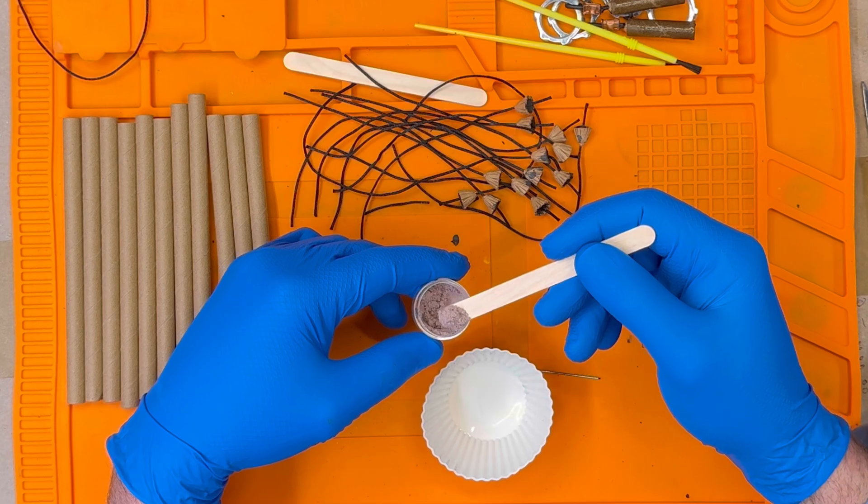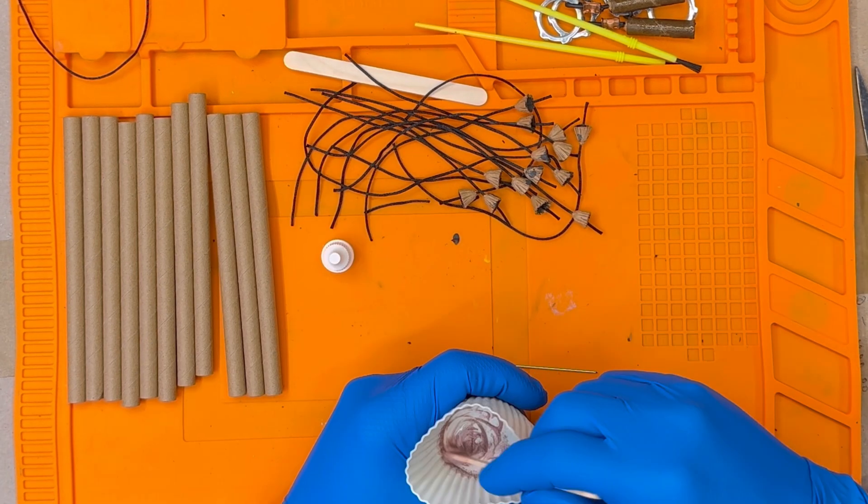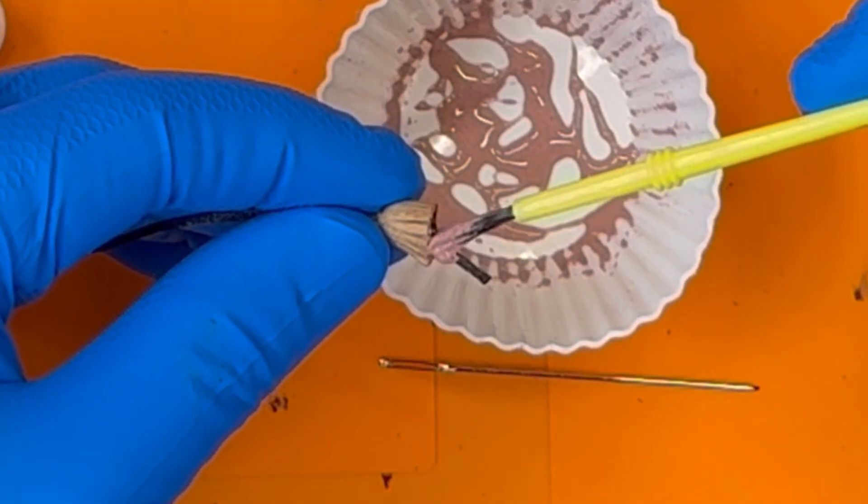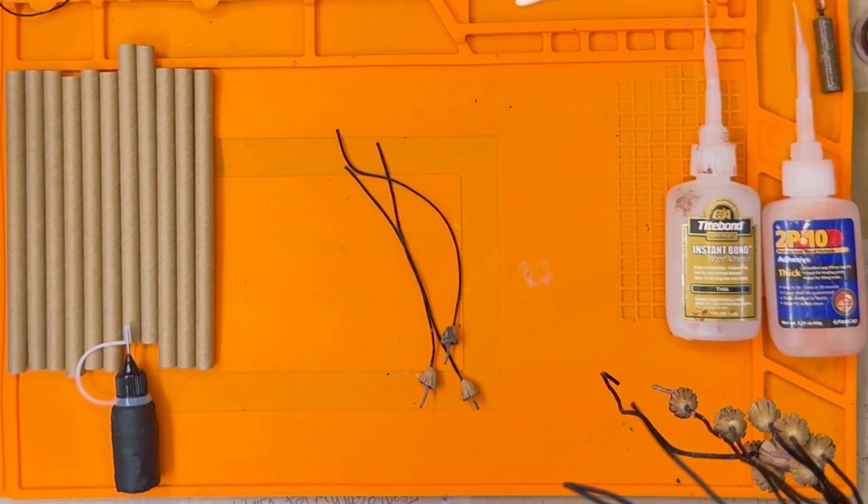Then we mix some of the striker composition creating a consistency slightly thinner than pancake batter. We coat the ends of the cord with this striker mixture via paintbrush or dowel or by dipping it if you want. We allow it to dry.